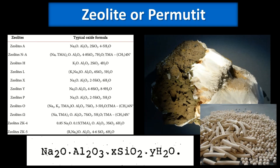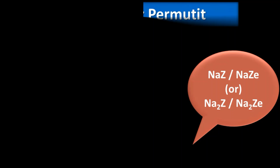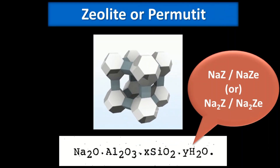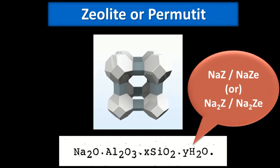Here you can see a list of zeolites available in nature and their typical formulas. At the bottom you can see sodium zeolite, which we are going to use in our process. The first picture shows zeolite extracted from nature and the second is synthetically prepared zeolite. The word 'permutit' is Greek-derived and means 'boiling stones.'